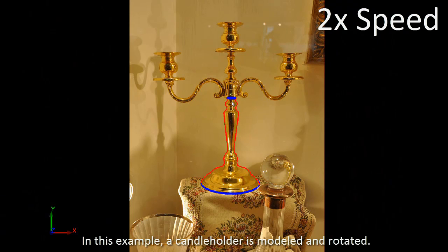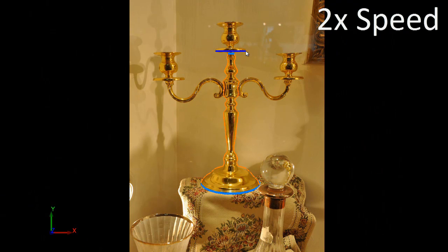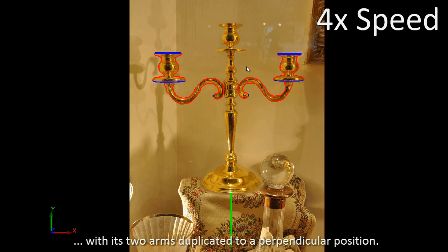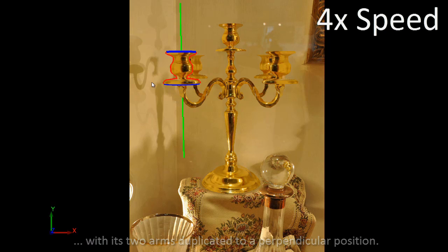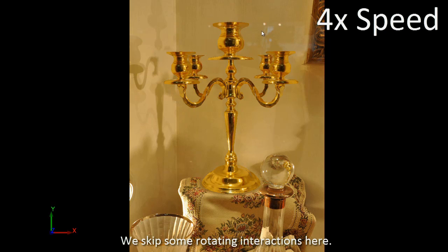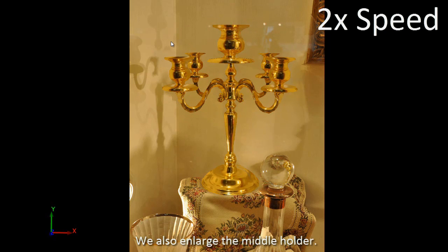In this example, a candle holder is modeled and rotated, with its two arms duplicated to a perpendicular position. We skip some rotating interactions here and also enlarge the middle holder.